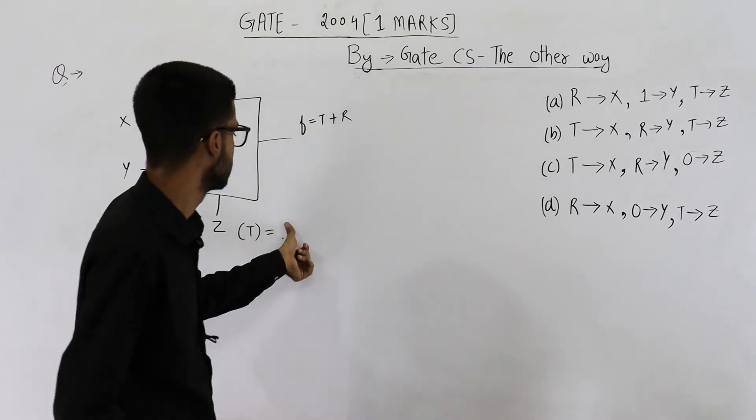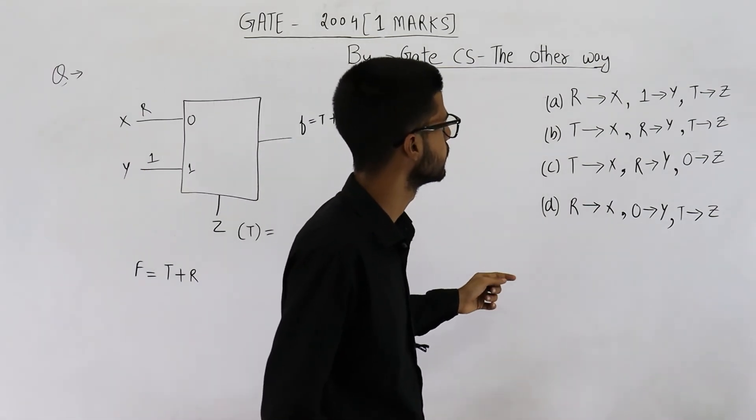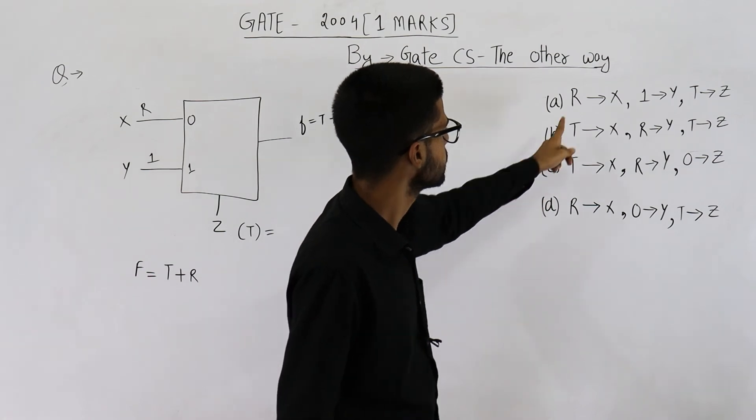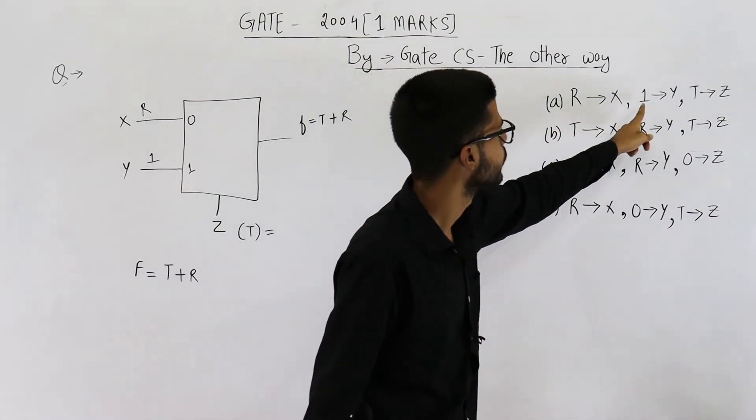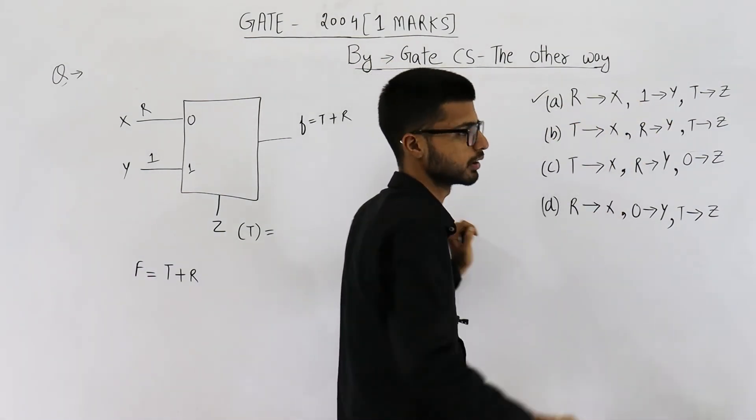Let us see which option it is. The values are x = r, y = 1, and z = t. So it is option A.